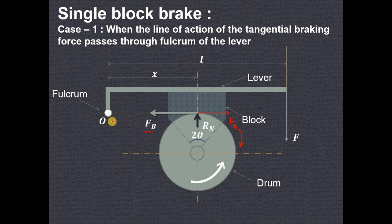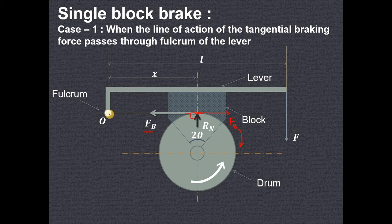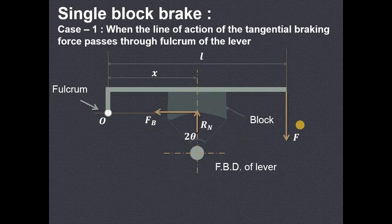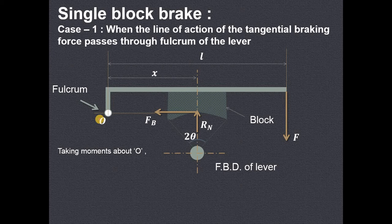The line of action of FB is passing through this fulcrum as shown. The distance of this normal reaction Rn — normal is perpendicular drawn at the point of contact of this shoe and the drum. The distance X is the distance of the normal reaction from fulcrum O, and L is the distance between fulcrum O and the point of application of force F. We have removed the drum and only shown the block or shoe. Now we will take moments about point O, considering clockwise moments as positive and anticlockwise moments as negative.